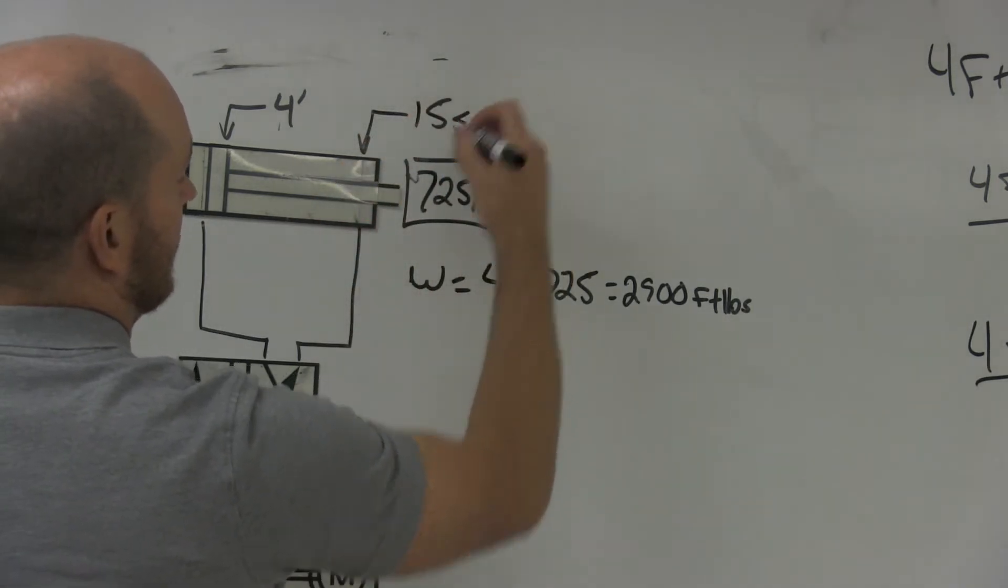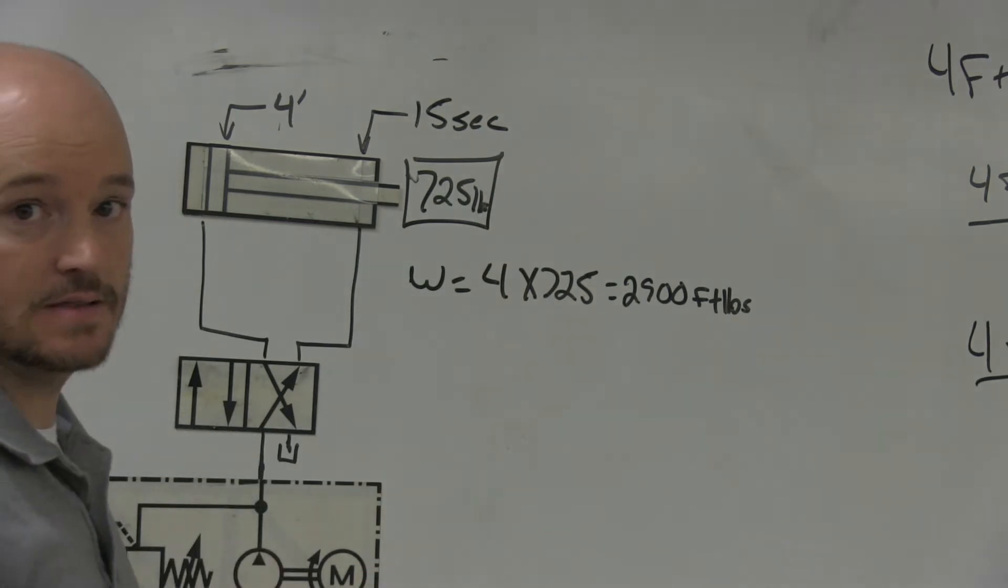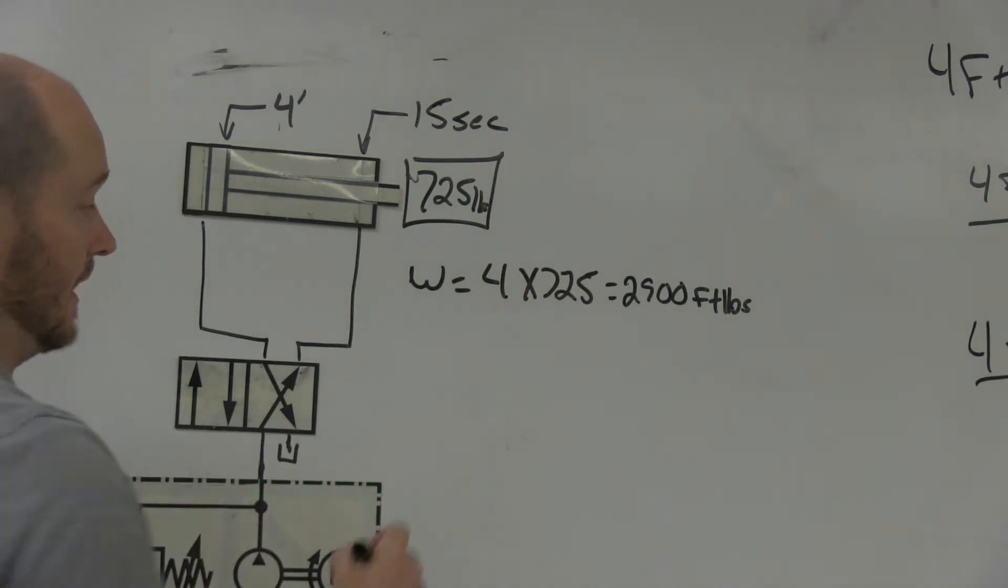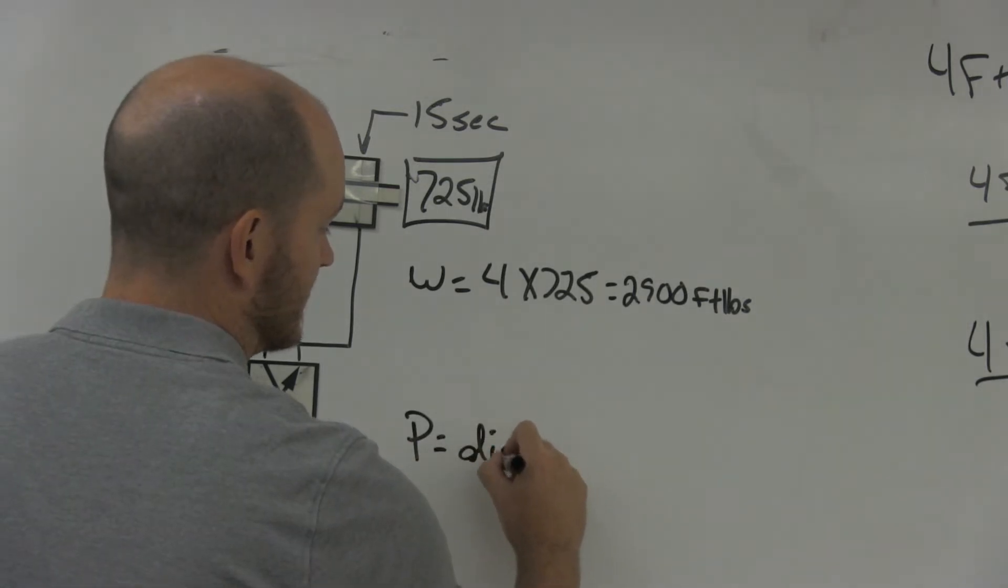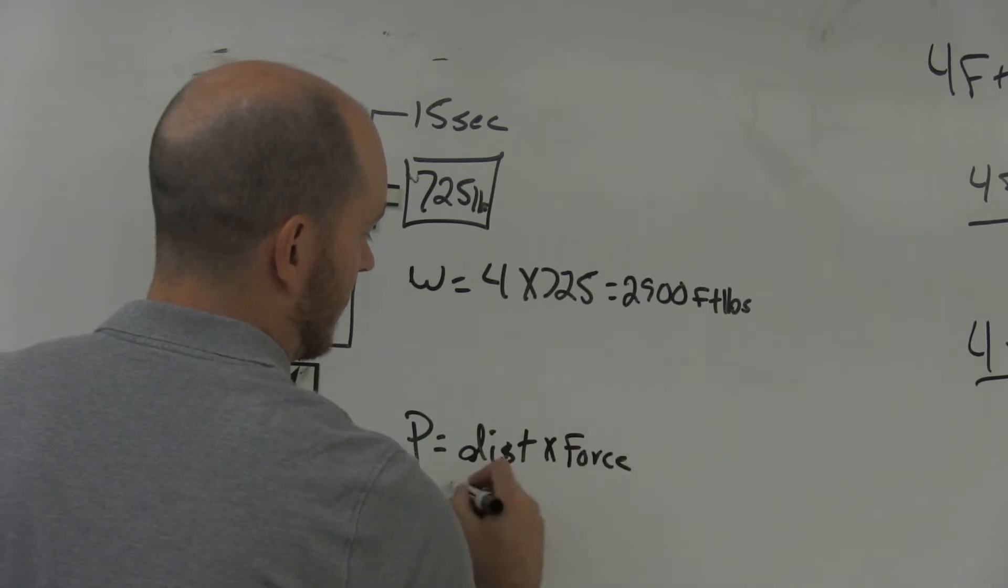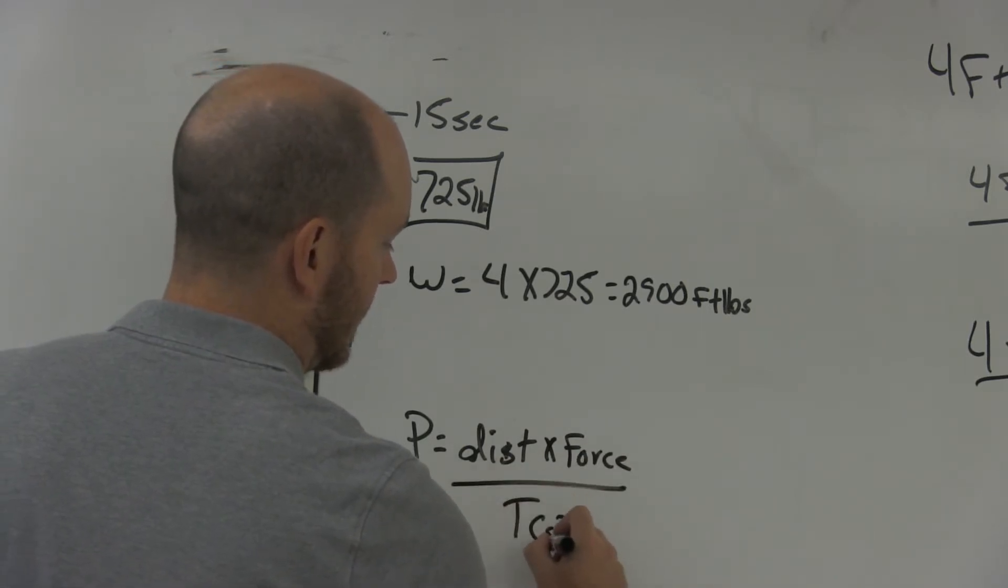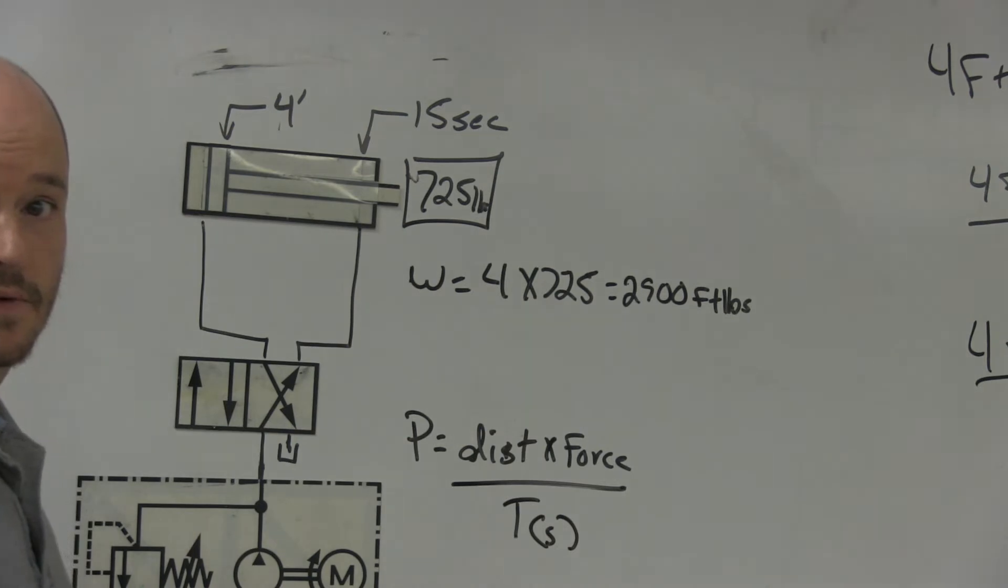So the formula for calculating power is the distance the object is moved times the force divided by time in seconds.